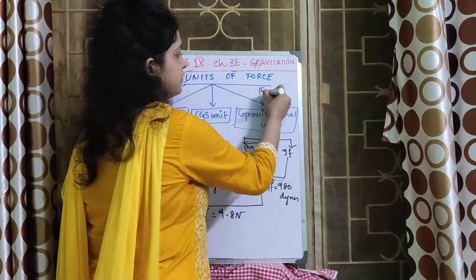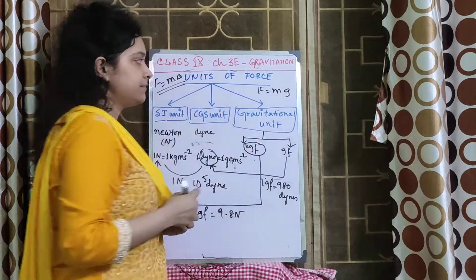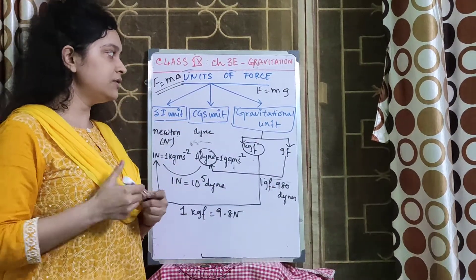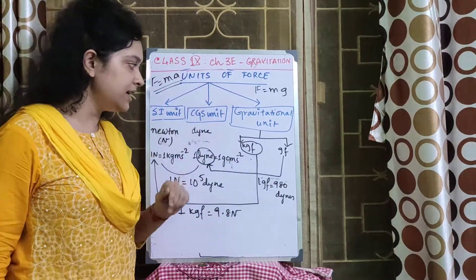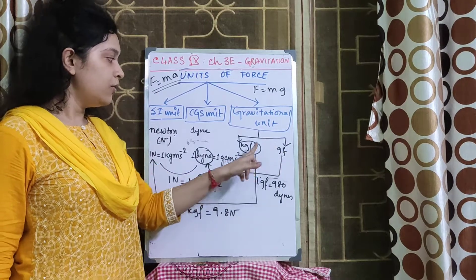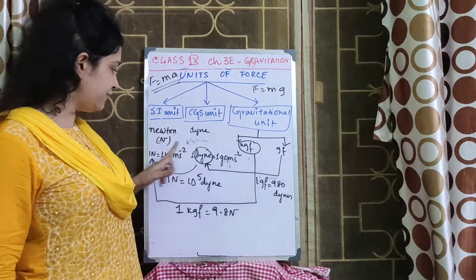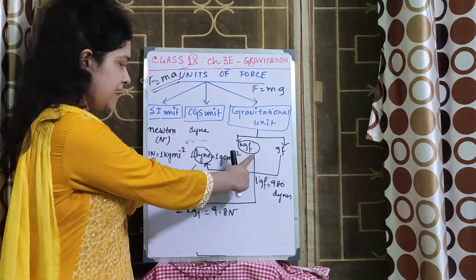And these are the gravitational units of force, which I have just done in the previous video lesson from chapter 3E. KGF and GF. What is the relation between KGF and Newton?